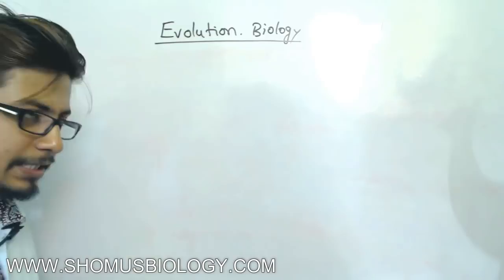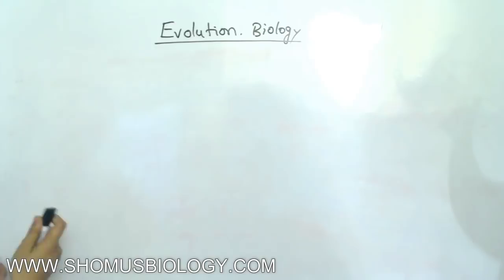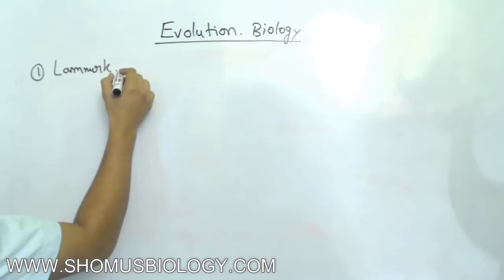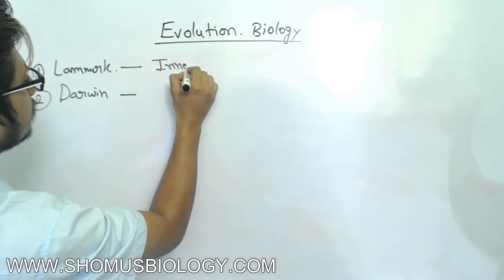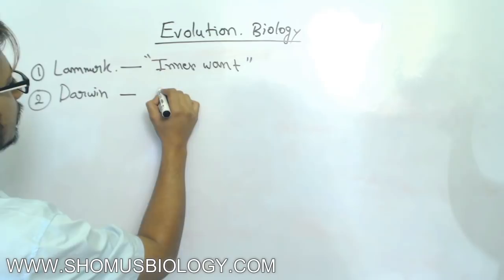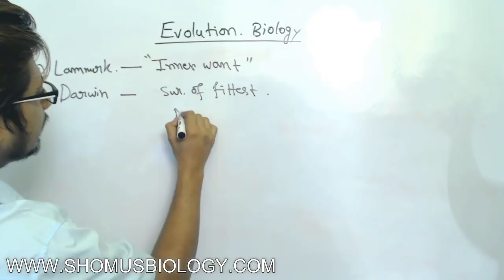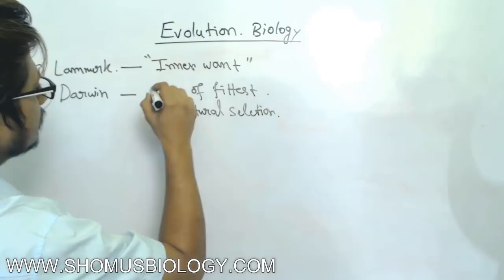I'll explain this idea of evolution using the classic example of the giraffe's tall neck — why giraffes have a tall neck and how exactly they ended up with such a tall neck. Lamarck's idea is the idea of 'inner want,' and Darwin's idea is the idea of 'survival of the fittest' and natural selection.